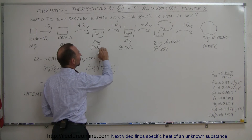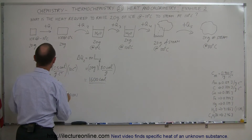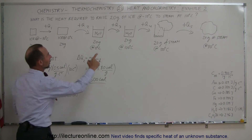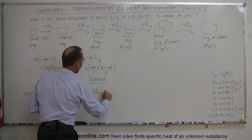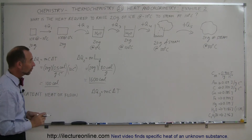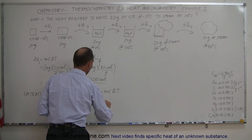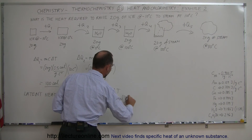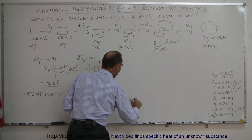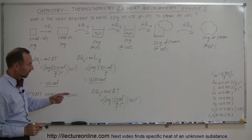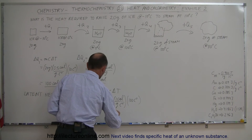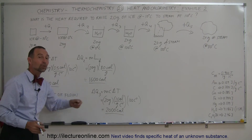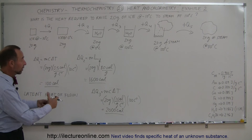Now we want to heat up the water from 0 degrees centigrade to 100 degrees centigrade. For that we need delta Q3 = MC delta T. We still have 20 grams of water. The specific heat of water is 1 calorie per gram per centigrade degree. The change in temperature is 100 centigrade degrees. So 20 × 1 × 100 = 2,000 calories to take water from 0 degrees centigrade all the way up to 100 degrees centigrade.